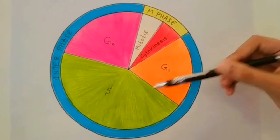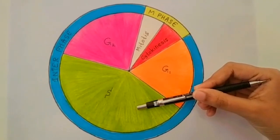From the G1 phase, cells go to the S phase. Cells replicate DNA in the S phase.